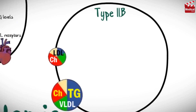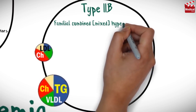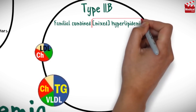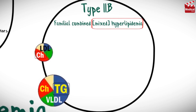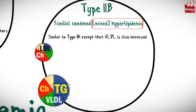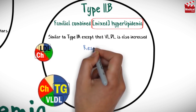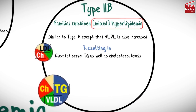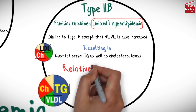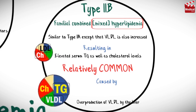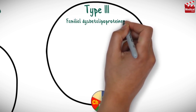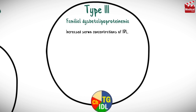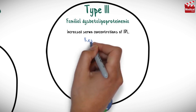Type 2b is familial combined or mixed hyperlipidemia, meaning that both cholesterol and triglycerides are elevated — that means high LDL and VLDL. This type is similar to type 2a except that VLDL is also increased, resulting in elevated serum triglycerides as well as cholesterol levels. This type is relatively common and is caused by overproduction of VLDL by the liver.